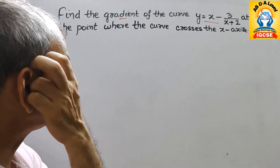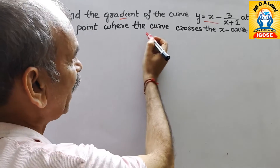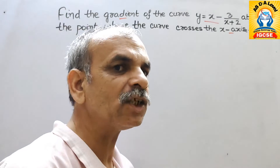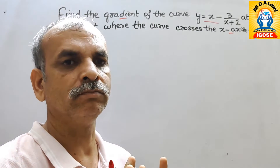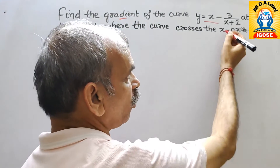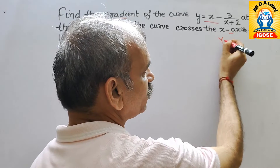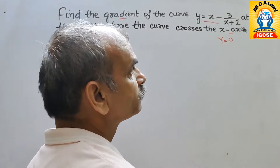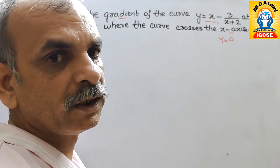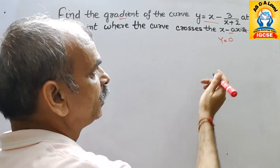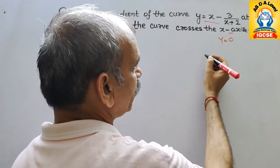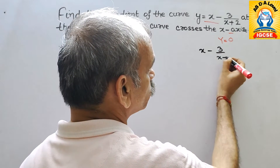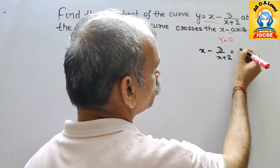They have given the point where the curve crosses the x-axis. On the x-axis, y is equal to 0. So we substitute this value: (x-3)/(x+2) = 0.